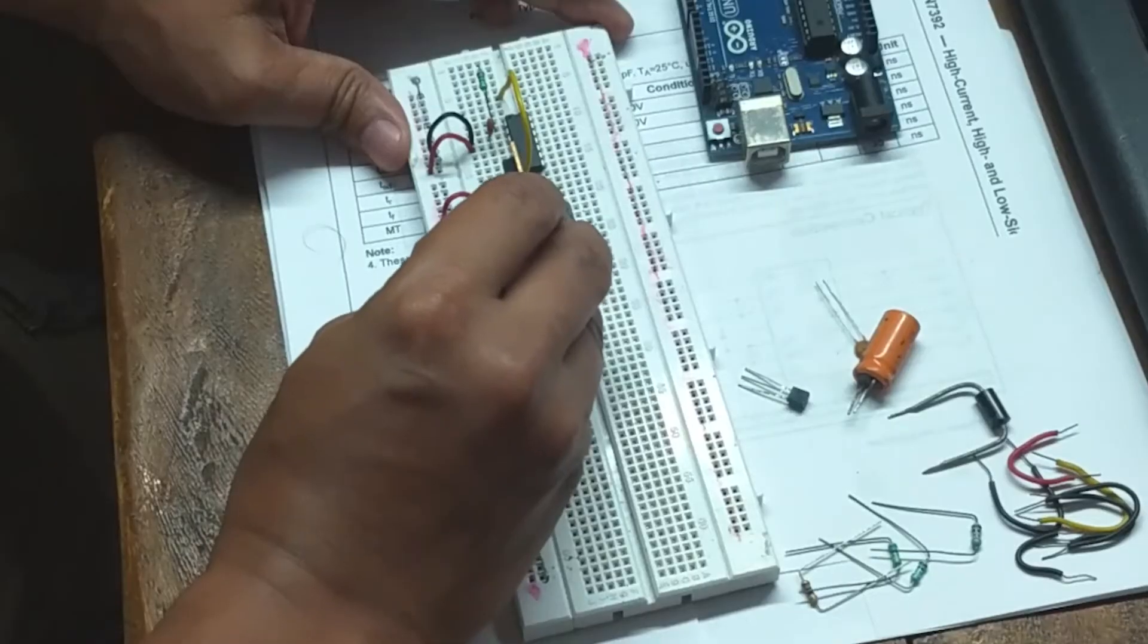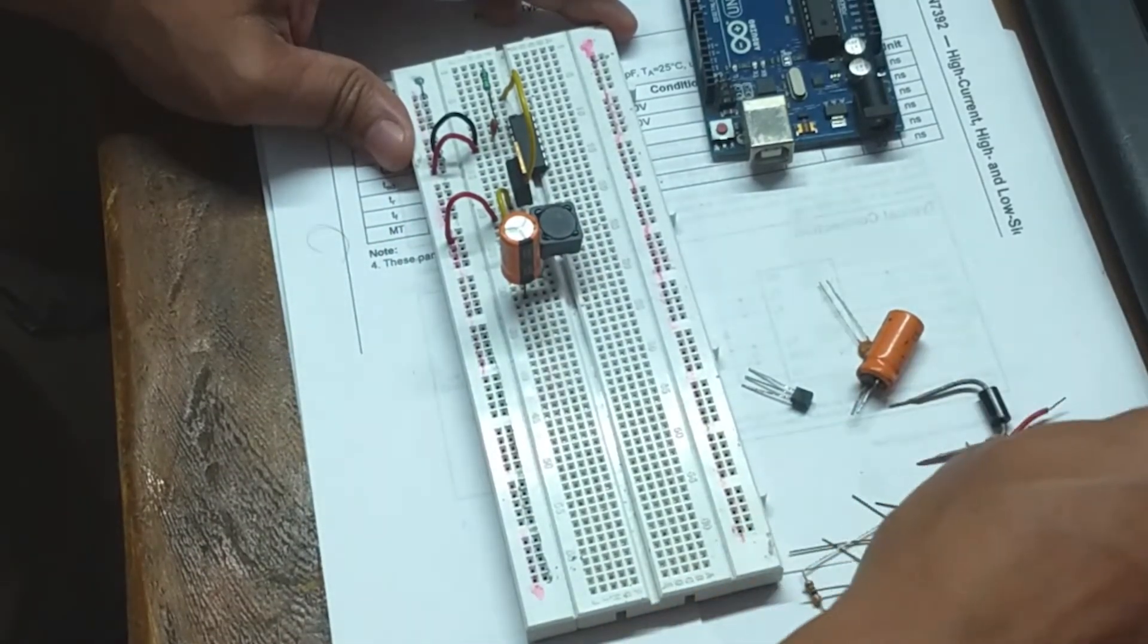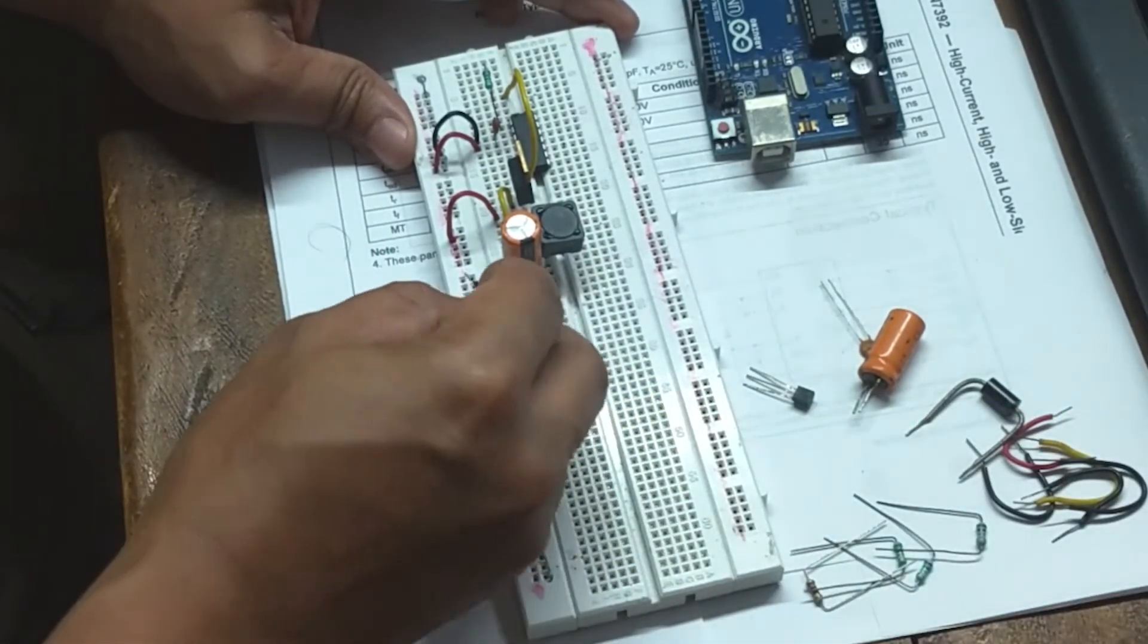MOSFET gate is connected to pin number 1 of IR2110. I will use this 47 microhenry inductor coil and a 1000 microfarad capacitor. Here the inductor value is not that much critical, at least for the circuit to function.